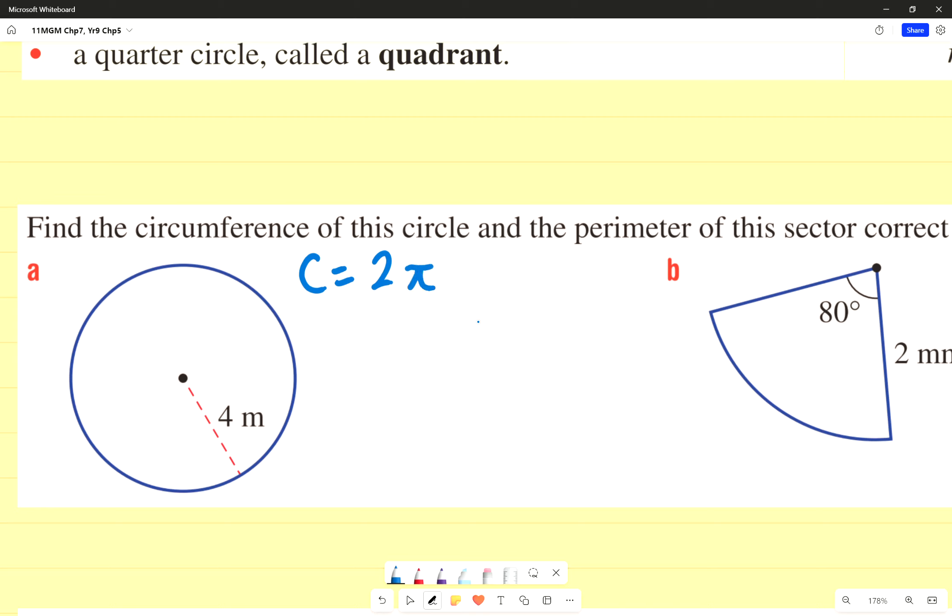I'm going to say that π, apologies, my pen's not working right now, but 2πR. My R, in this case, is going to equal to 4. So that means my radius equals to 4.